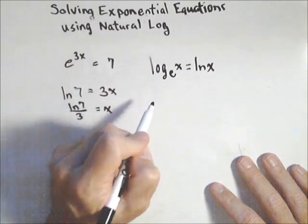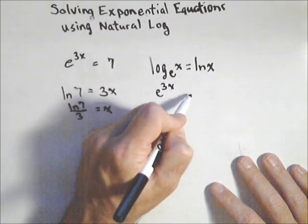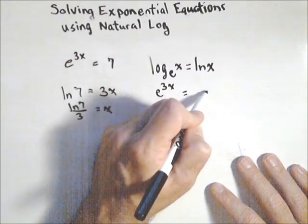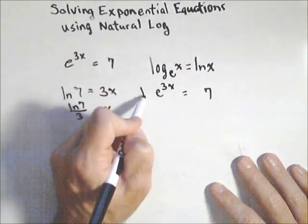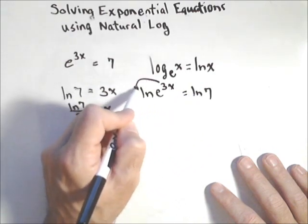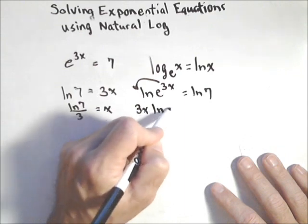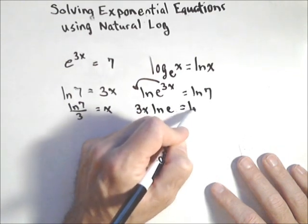The other option is we could take the natural log of both sides. When we have this equation, once we've isolated that exponential piece, we can take natural log of both sides. Property of log says we can pull the exponent out front, so we get 3x times ln of e equals ln of 7.